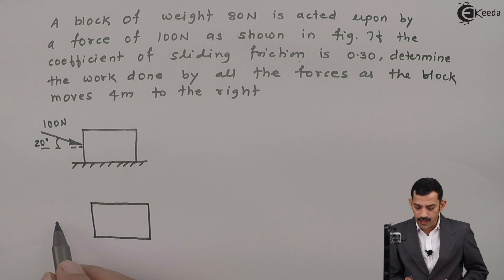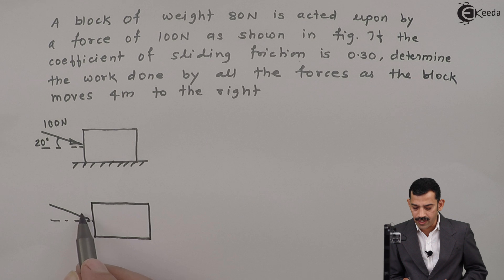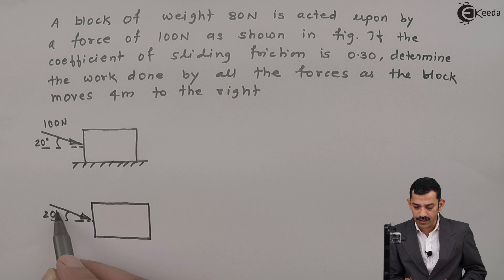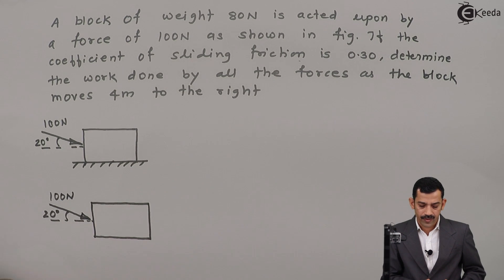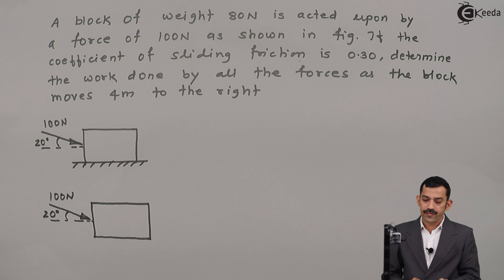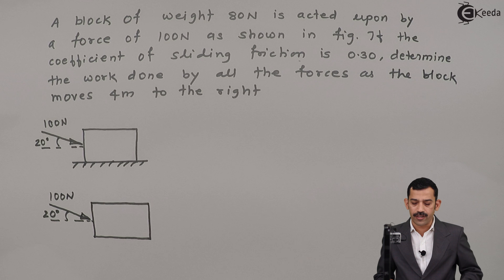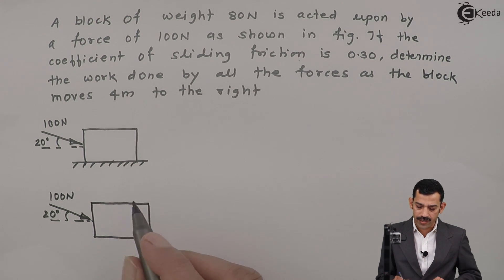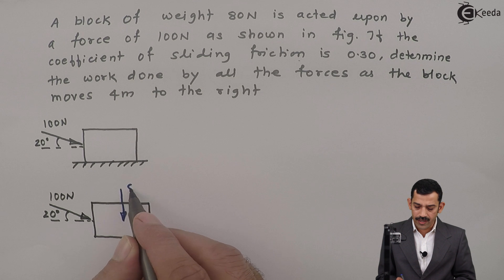On this block, a force of 100 Newton is acting which is inclined at 20 degrees with horizontal. So this is the external force with magnitude of 100 Newton. Other forces which act: weight of block. The weight of block is given as 80 Newton. Weight acts in downward direction. Therefore, I will represent this as weight 80 Newton.